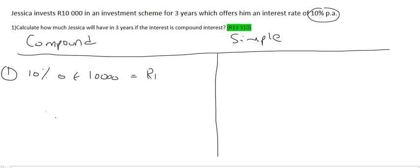So that's a thousand Rand. And so how much will she have in total after one year? Well, she would have 11,000 Rand. For the simple interest it's going to be exactly the same for the first year.